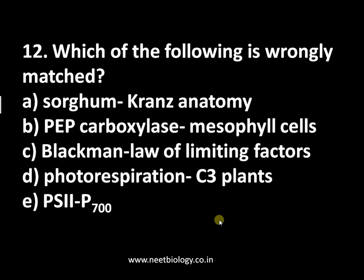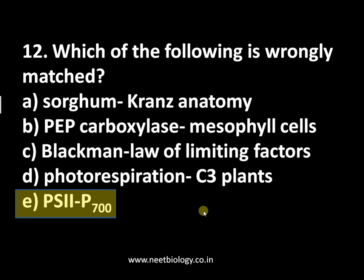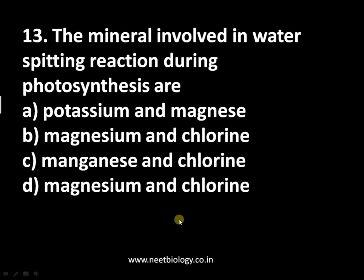Question number twelve: which of the following is wrongly matched? A: sorghum – Kranz anatomy, B: PEP carboxylase – mesophyll cells, C: Blackman's law of limiting factors, D: photorespiration – C3 plants, E: PS2 – P700. The answer is PS2 P700 — it is incorrectly matched; PS2 is P680. Sorghum is a C4 plant showing Kranz anatomy, PEP carboxylase is in mesophyll cells, and photorespiration generally occurs in C3 plants.